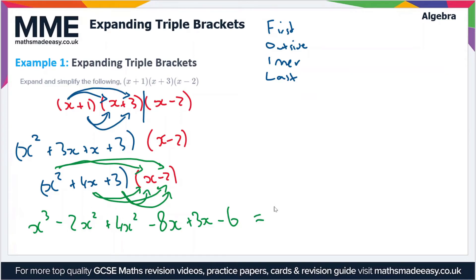So that's the expanded triple bracket. We just need to collect like terms now. So we have one term in x³, so that's just x³ on its own. And then the terms in x² we have -2x² + 4x², so that simplifies to plus 2x². Now we have two terms in x, so we've got -8x + 3x, that simplifies to -5x, and then we have -6 on the end. So that is the expanded triple bracket in its simplified form.